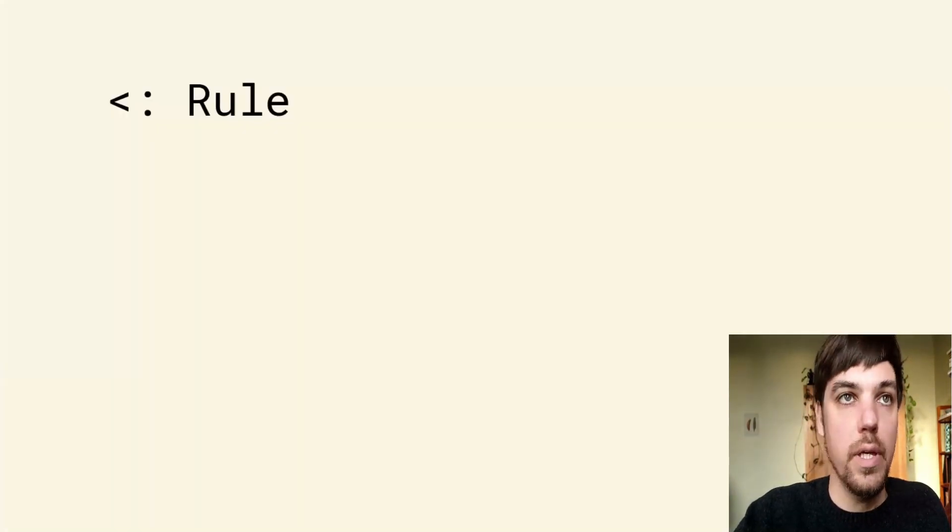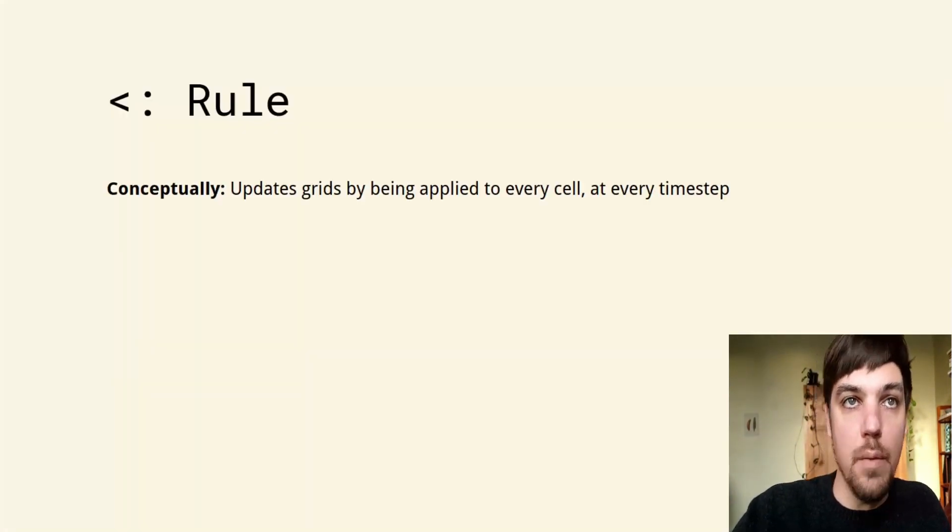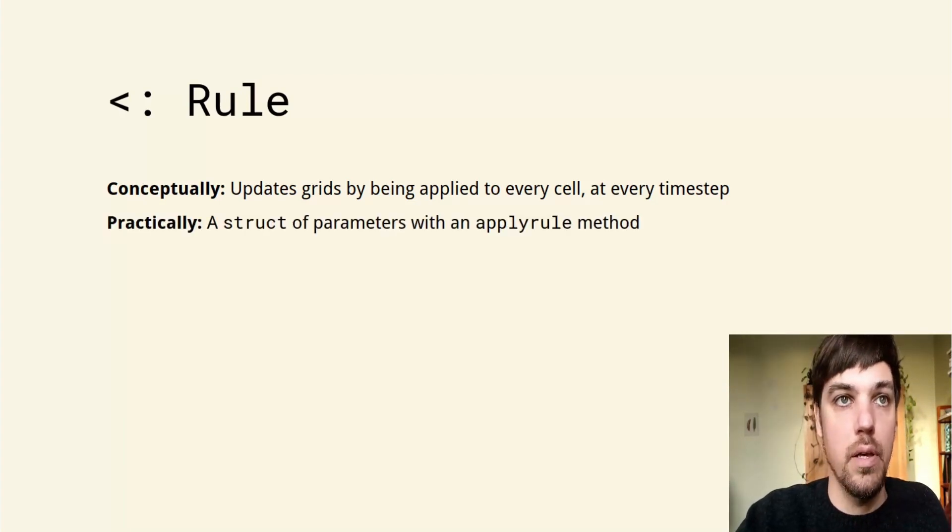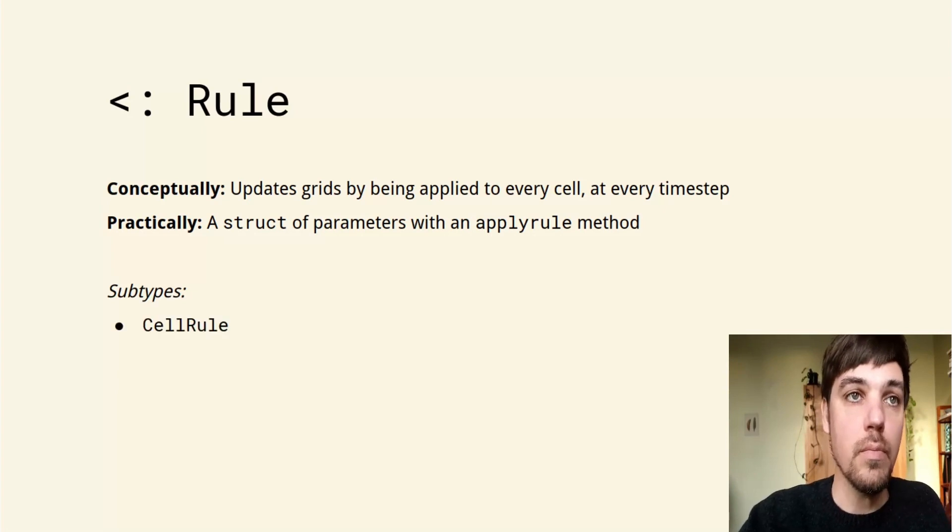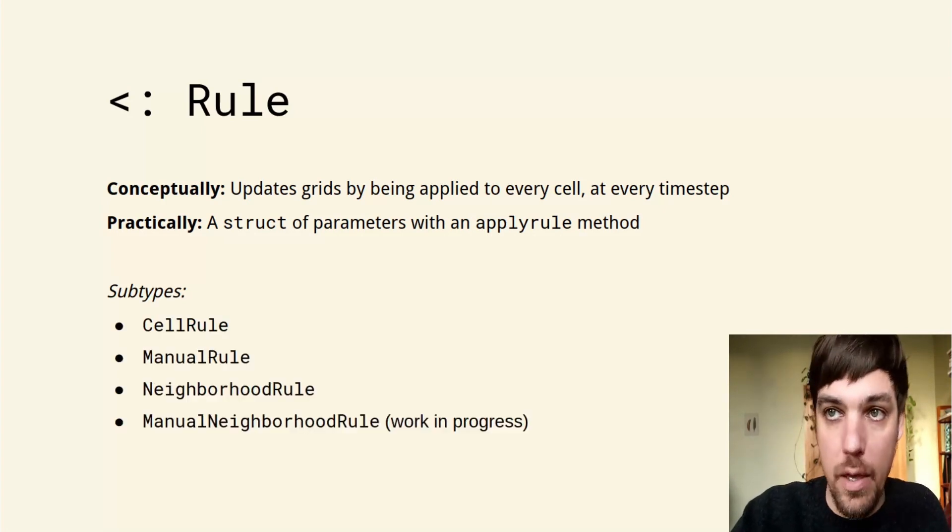Rules are the next concept. A rule basically updates grids by being applied to every cell at every time step. Practically, they're a struct of parameters with an apply rule method that's run at every cell and every time step. Rules have a number of subtypes, and working out what these are and how they behave has been a large part of developing this package.